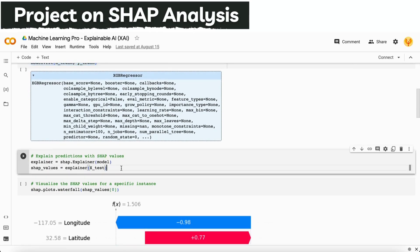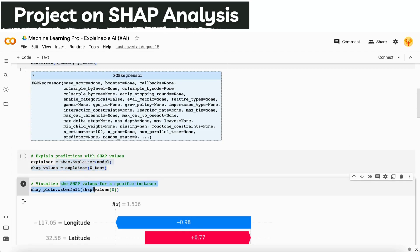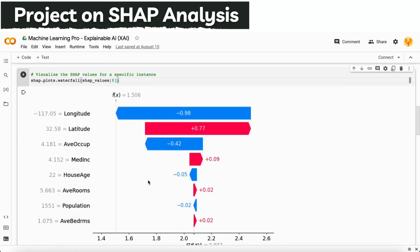For that I plot the waterfall plot. This waterfall plot shows the importance of each variable. The most important variables are longitude, latitude, average occupancy, median house age, average rooms. The longitude column shows that it is negatively correlated with our price column and latitude is positively correlated with our price column.